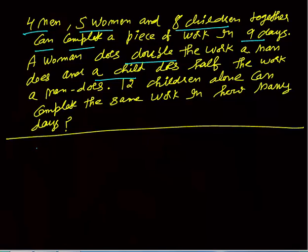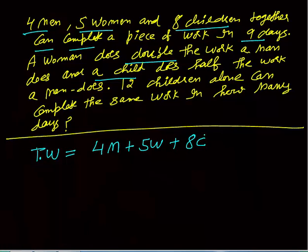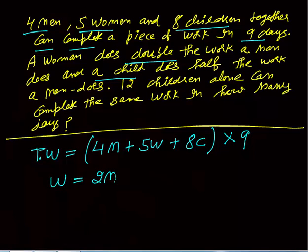First, four men, five women, and eight children can complete the work in nine days. Total work equals four m plus five w plus eight c, all multiplied by nine. It is given that a woman does double the work a man does, so w equals two m. A child does half the work a man does, so c equals m divided by two.